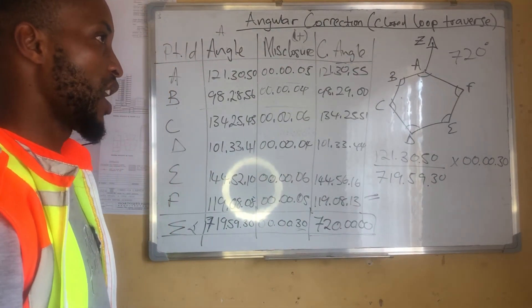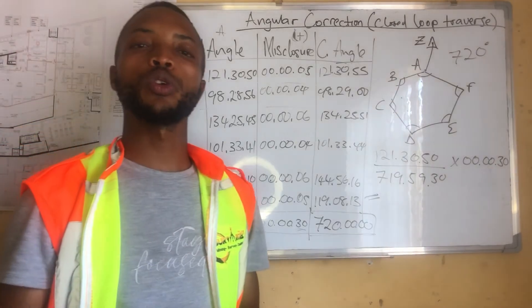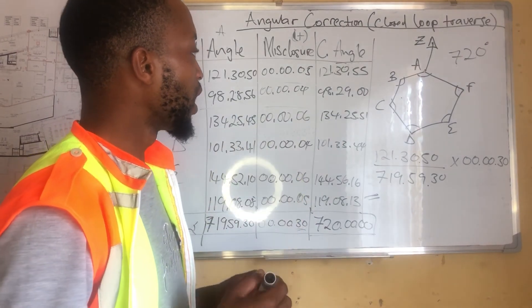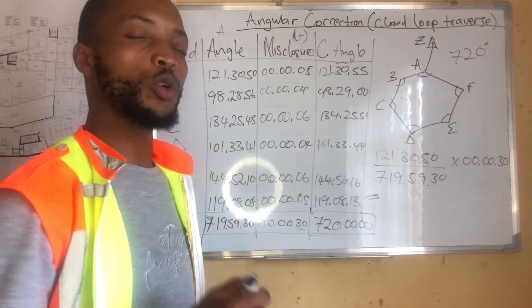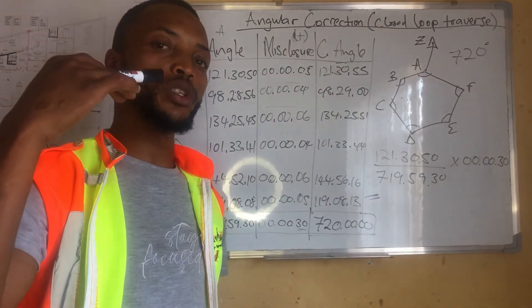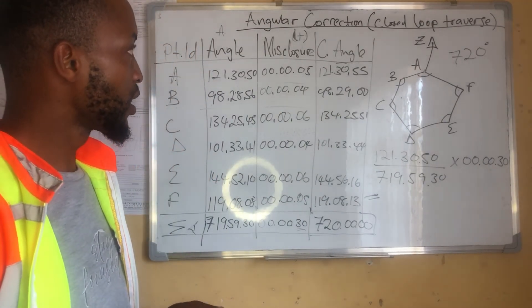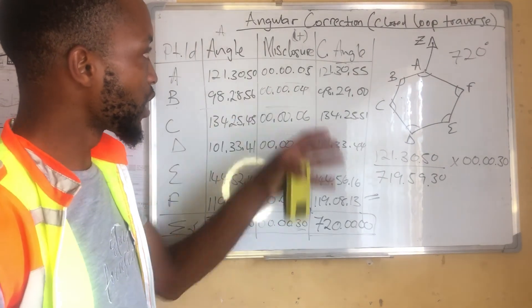This is the weighted average. We can also look on using another method, the equal distribution, which we will be doing in our next video. And, for this video, I think this is all.